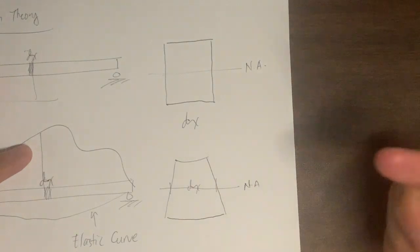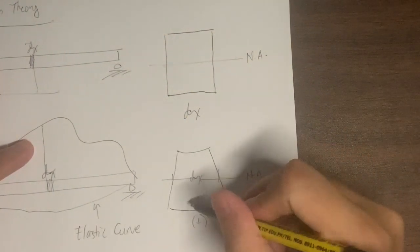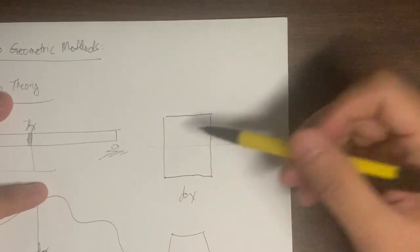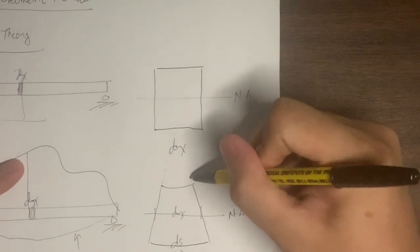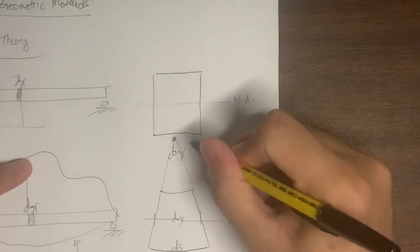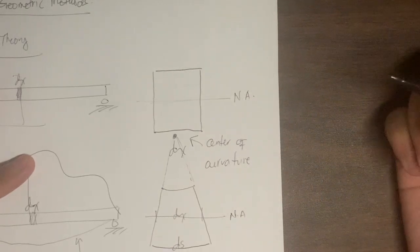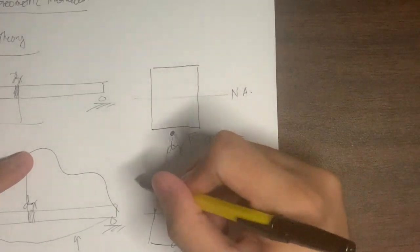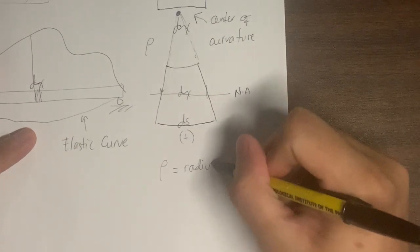Let's consider the bottommost part of the beam. This is under tension, so it will cause elongation — a positive deformation. Let's say this is now ds. If we extend lines from the sides of the deformed strip, they will meet at some point — that point is known as the center of curvature. From the center of curvature up to the neutral axis, this distance is known as rho, which we define as the radius of curvature.